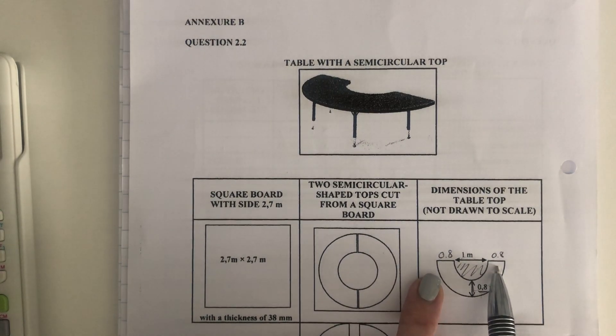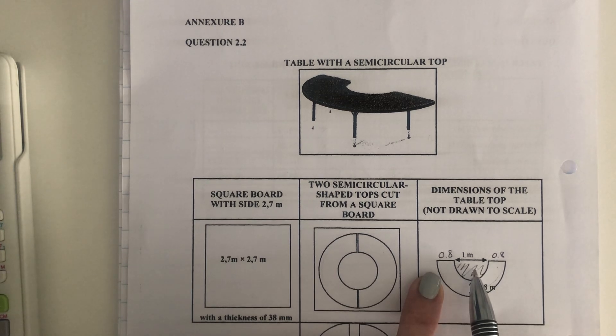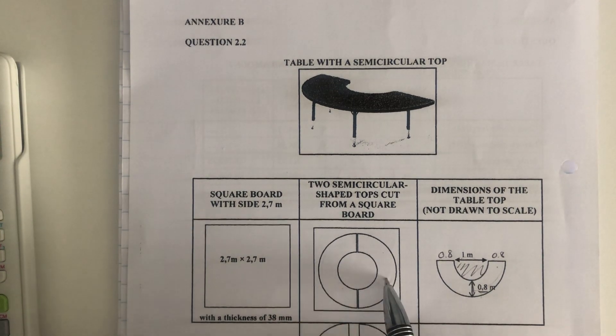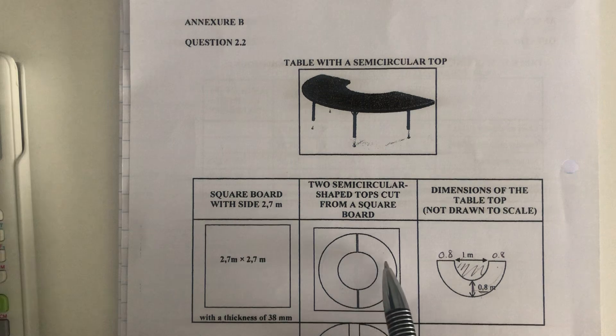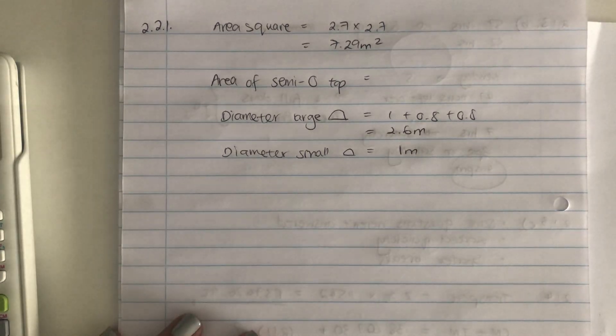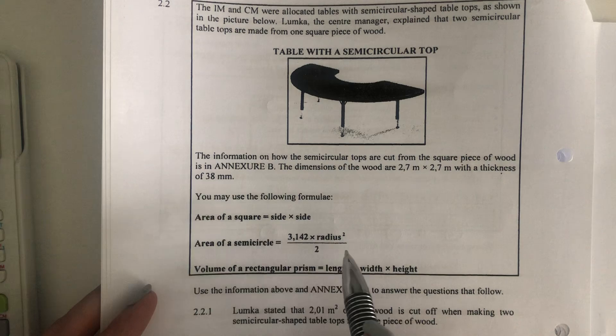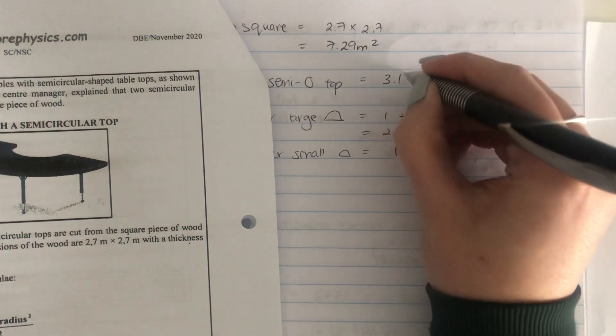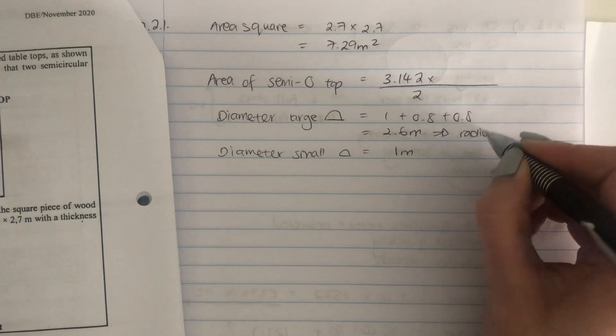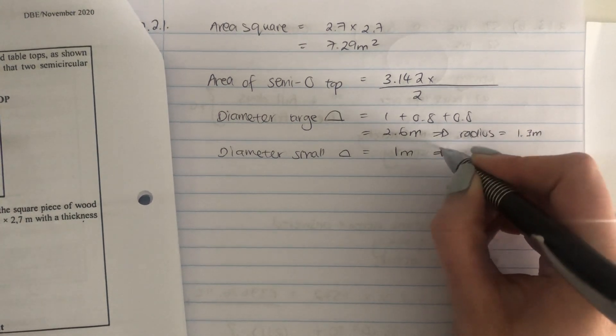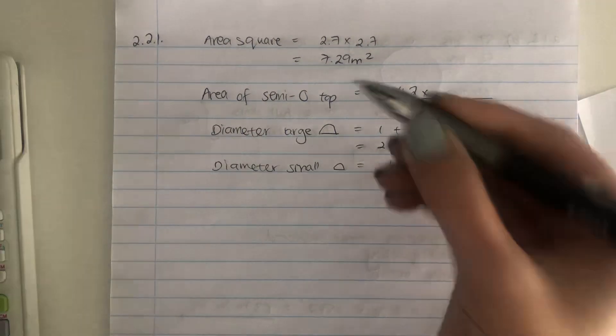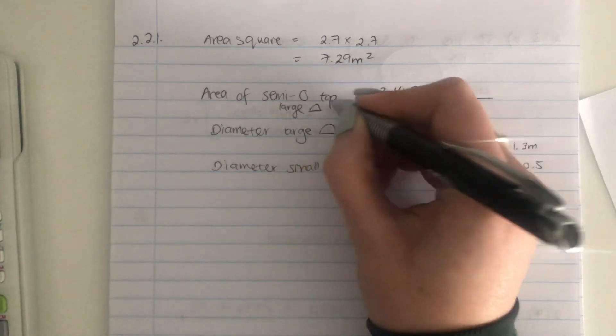The diameter of a large semicircle is going to be 1 plus 0.8 plus 0.8, which is 2.6. The diameter of the small semicircle, so that's the semicircle that's cut out, is 1 meter. So there's the small semicircle and there's the large semicircle. So we're going to work out the area of the big semicircle and subtract from it the area of the small semicircle. So let's go and work this out. So you could be saying, I don't know how to find the area of a semicircle. Well, not a problem. We have it over here. So it is 3.142 times radius squared.